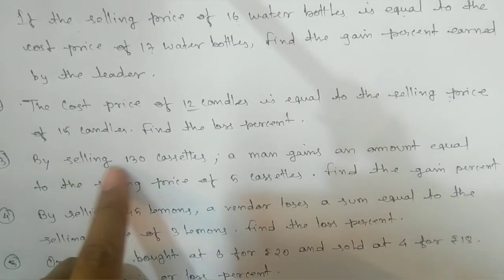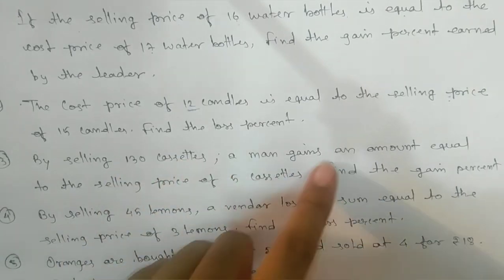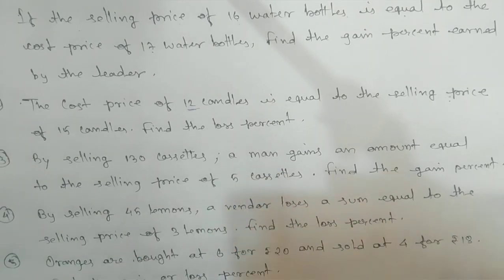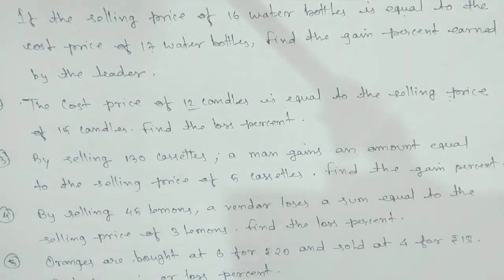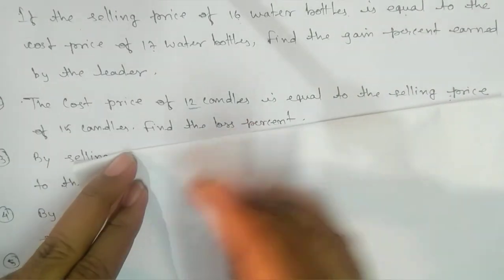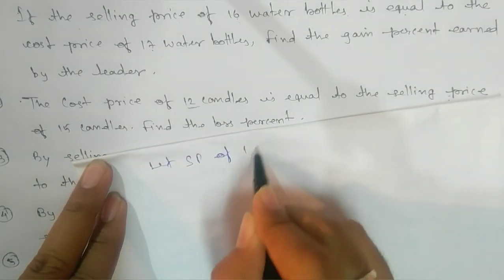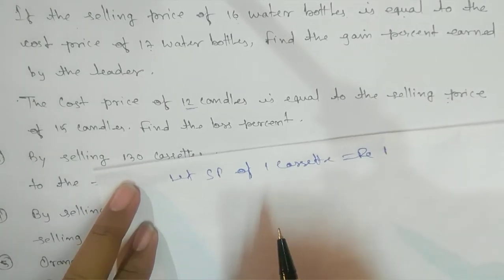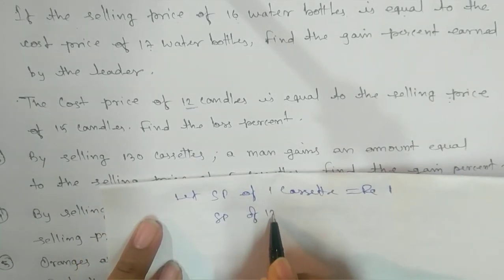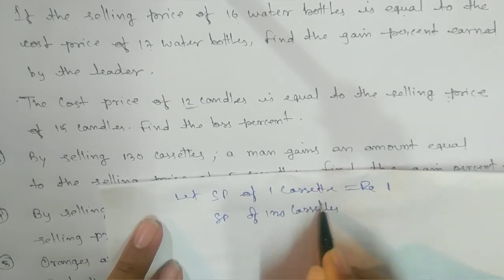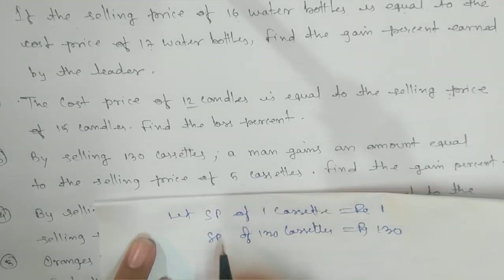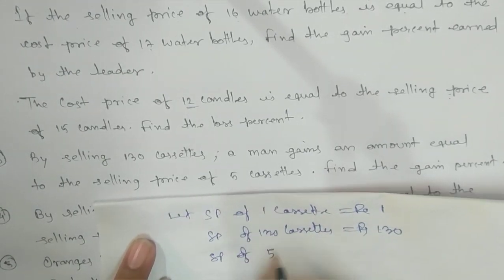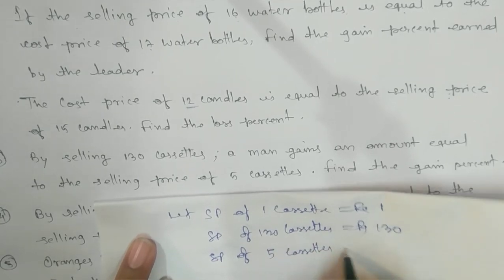For the third question: by selling 130 cassettes, a man gains an amount equal to the selling price of 5 cassettes — find the gain percent. Here there is no CP given, so we take SP of 1 cassette = ₹1. Then SP of 130 cassettes = ₹130, and SP of 5 cassettes = ₹5.